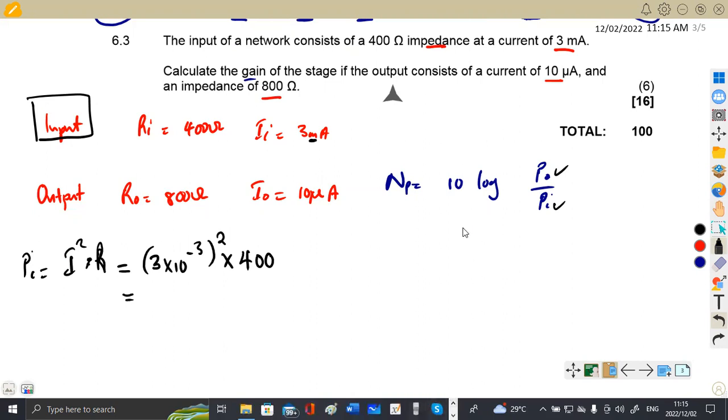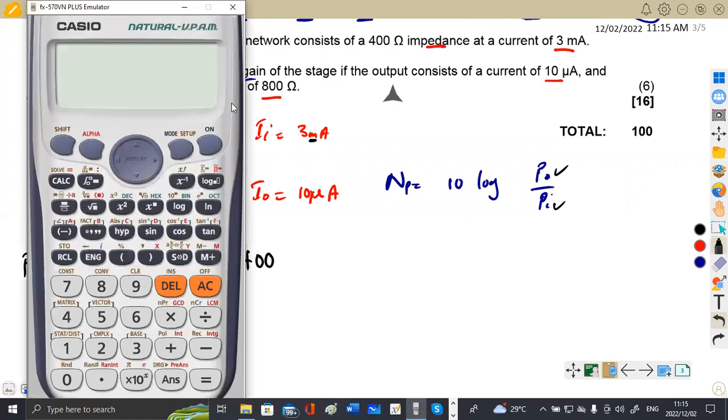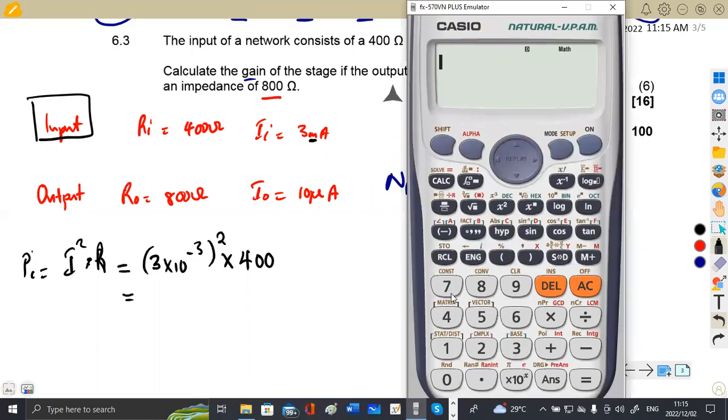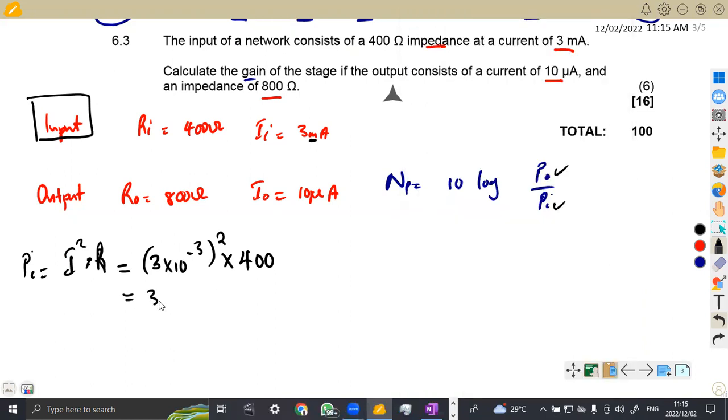Let's check from our calculator. Open bracket, 3 times 10 to the power of minus 3, close the bracket to the power of 2 times 400. We can have 9 over 2500 or 3.6 times 10 to the power minus 3. So we've got 3.6 times 10 to the power minus 3 watts or 3.6 milliwatts. Remember to the power of minus 3 means milli. So this is our input power.